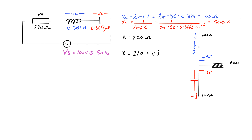So R is 220 + 0j ohms, XL is 0 + 100j ohms — purely imaginary — and XC is 0 − 500j ohms.